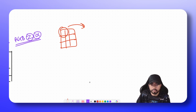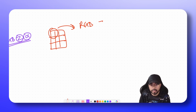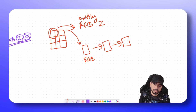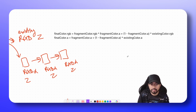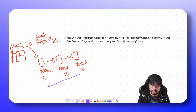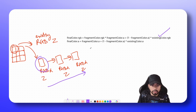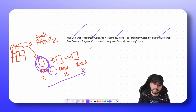For a given fragment, we have the existing RGB and Z values in the framebuffer, and a linked list where each element has an RGB value, an alpha value, and a Z value. To calculate the final color, we blend all these colors together based on alpha values and check Z values against the existing Z. We iterate over the first element of the linked list and mix it with the existing color using alpha blending: final_RGB = fragment.RGB * fragment.Alpha + (1 - fragment.Alpha) * existing.RGB.